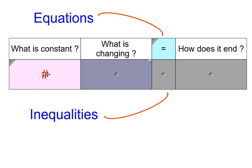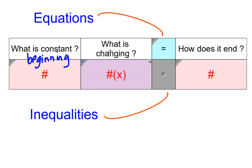The constant is a number representing the beginning, while the other constant represents how it ends. What is changing is our variable — the object of what we're trying to find — and there's always a number associated with it. All of these things are the same with inequalities; the difference is we use an inequality sign: less than, greater than, less than or equal to, or greater than or equal to. Let's practice reading several stories and writing the inequality without solving them.